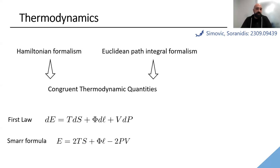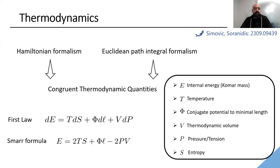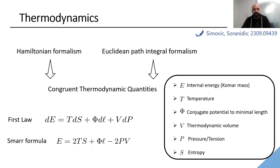We treated the minimal length scale parameter as a thermodynamic parameter. The first law describes the quasi-static difference in internal energy between equilibrium states. The internal energy is played by the Komar mass m, T is the temperature, S is the entropy calculated to be the Bekenstein-Hawking entropy, Φ is the conjugate potential to the minimal length scale l, and V is the thermodynamic volume conjugated to the pressure from the cosmological constant. We also showed there is a linear Smarr formula — for NED theories not admitting the Maxwell limit, there is no guarantee this linear Smarr formula exists, but it does exist for the Hayward and Bardeen models.